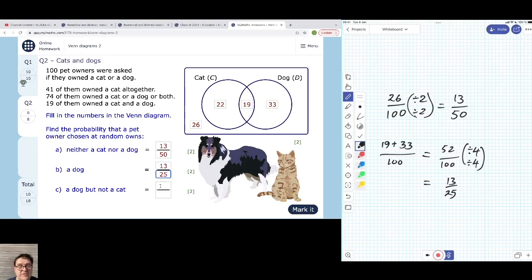OK, what's the probability that someone picked at random owns a dog but not a cat? So there's 33 people that just own a dog. 33 out of the 100. 33 and 100 don't have any common factors. So we can mark that and see how we got on. 8 out of 8. Fantastic.